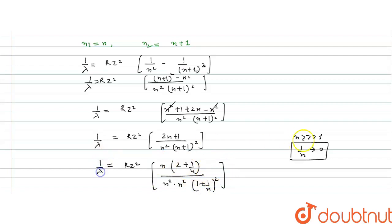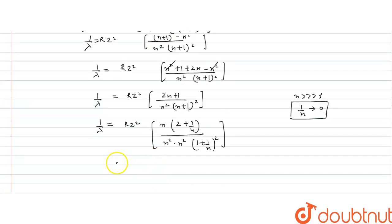So, now we can put 1 upon n is equal to 0, that it approaches to 0, to simplify this. So, this will become Rz square into 2n. As 1 by n approaches to 0, it becomes negligible quantity.